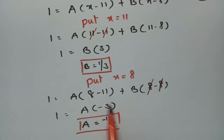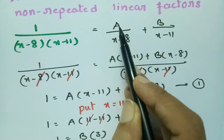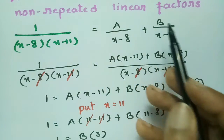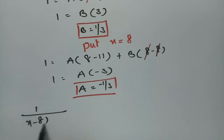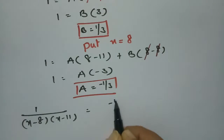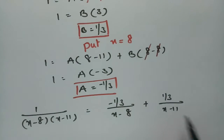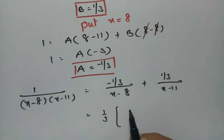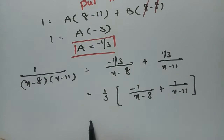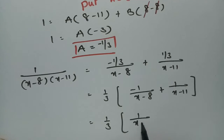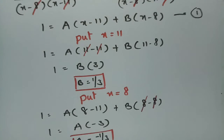After getting A and B values — B is 1/3 and A is minus 1/3 — I substitute back: 1 by (x minus 8)(x minus 11) = (minus 1/3) by (x minus 8) + (1/3) by (x minus 11). Bringing 3 down: this equals (1/3) times [1/(x minus 11) minus 1/(x minus 8)]. This is how we solve it — a simple approach.